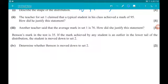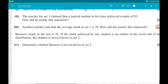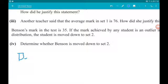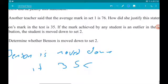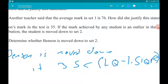Okay, then part 4. Benson's mark in the test is 35. If the mark achieved by any student is an outlier in the lower tail of the distribution, they are moved down to Set 2. Determine whether Benson is moved down. Okay, outliers. So Benson is moved down if 35 is less than the lower quartile minus 1.5 times the interquartile range. So we need to find the quartiles and the interquartile range.